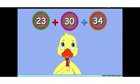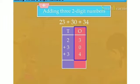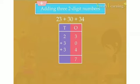Here we have to add 23, 30 and 34. To add these numbers, first we have to arrange the addends one below the other such that their ones are in the same column, then add the digits in the ones column.